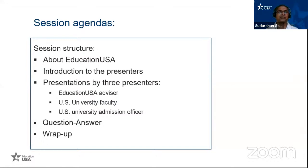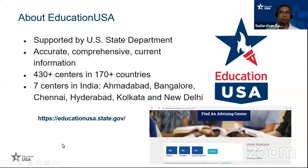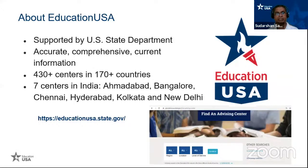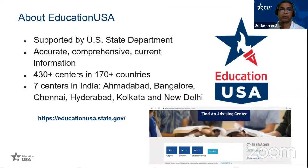EducationUSA is a very large network around the globe, supported by the U.S. Department of State. We have around 430-plus EducationUSA Advising Centers in 170 countries. We provide accurate, comprehensive, and current information about higher education in the U.S. Most importantly, we provide information about all accredited universities and colleges with no biased information. A degree from an accredited college or university is valid not only in the U.S. but wherever you go around the globe.